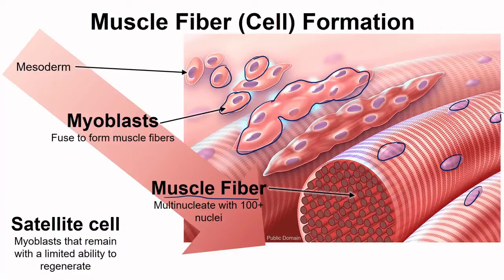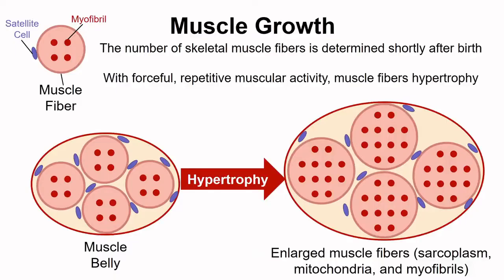Some myoblasts remain around these muscle fibers and are called satellite cells. They maintain a limited ability to regenerate muscle tissues. The initial formation of a muscle cell was through fusion of many myoblasts. Shortly after birth, we have the number of skeletal muscle fibers that we will have for life. While we cannot increase the number of fibers, these fibers can get larger through repetitive movements — a process called hypertrophy.